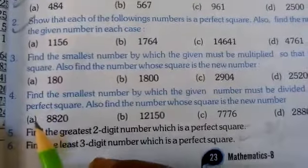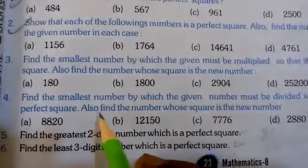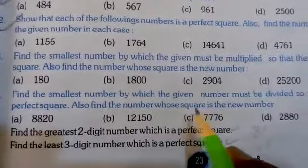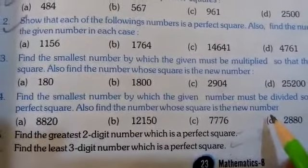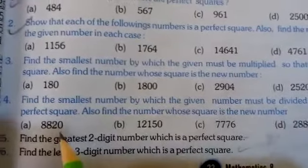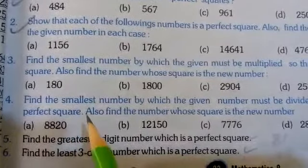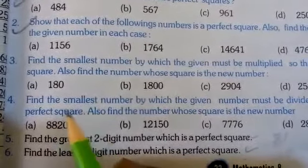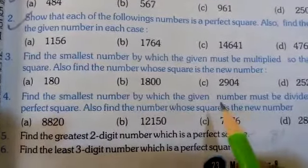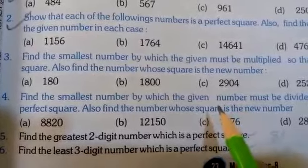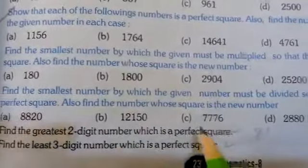So is part A mein jo hamara required number puchha gaya tha — also find the number whose square is the new number — toh woh jo new number tha jiska woh square hai, 42 ka square hoga woh naya number. Aur jo hamara the smallest number jisse hume divide karna tha, woh find hua: 5.